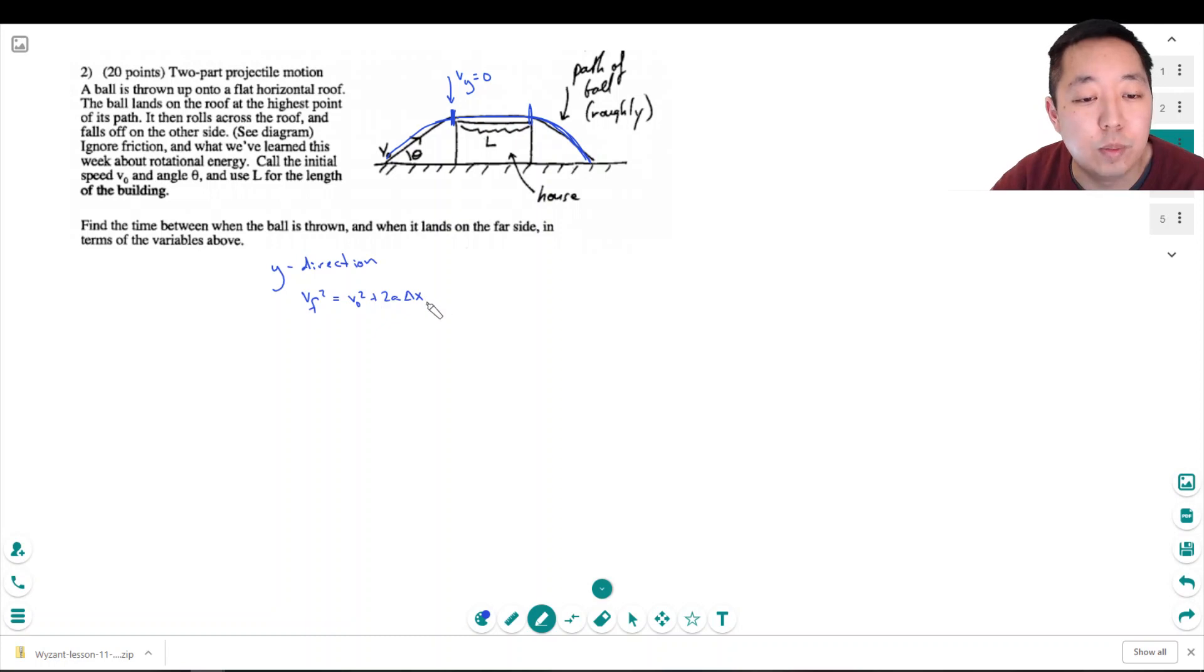Vf squared is equal to V0 squared plus 2a delta x. No, actually that wouldn't help us because I'm trying to find the time. So let's see, what's the other equation? Oh, Vf is equal to V0 plus at.